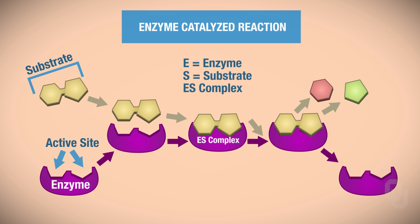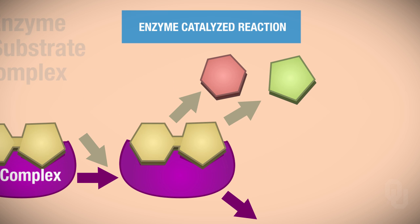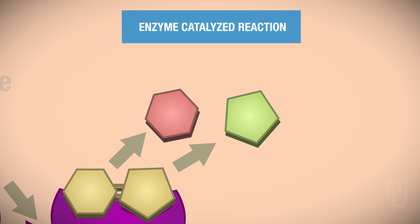So once the enzyme-substrate complex is formed, now a reaction can occur. In this particular example, notice during this catalyzed reaction that a bond is being broken between your substrates. So when that bond is broken, the substrates now get converted into products. So here we have two different products.